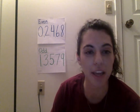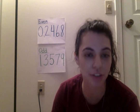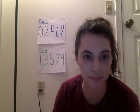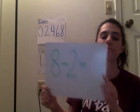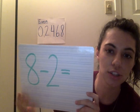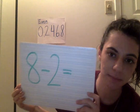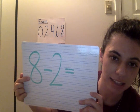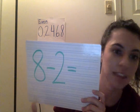So, when we are subtracting by 2, I want to show you two ways that you can figure it out. If I have the problem 8 minus 2, let's review what this problem is telling us. The first number we start with — 8 — is telling us the number of things we have.